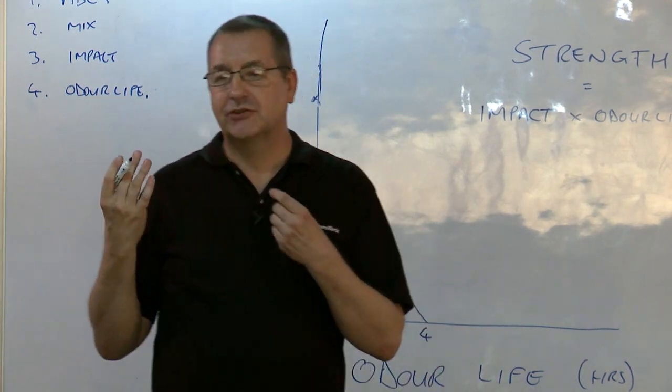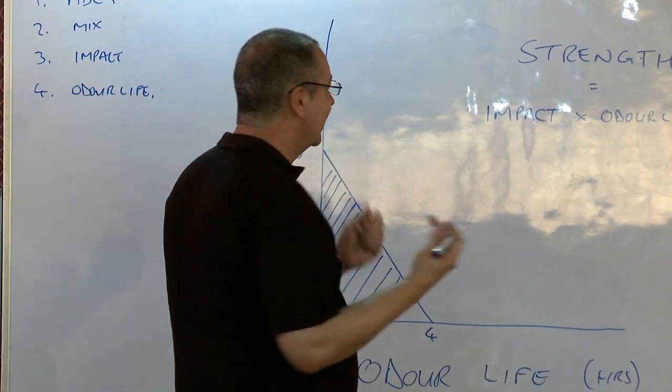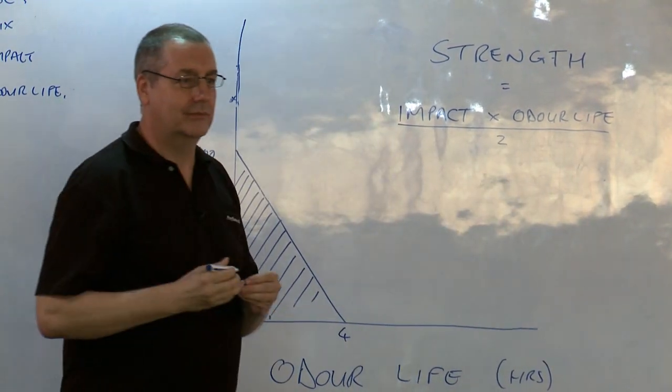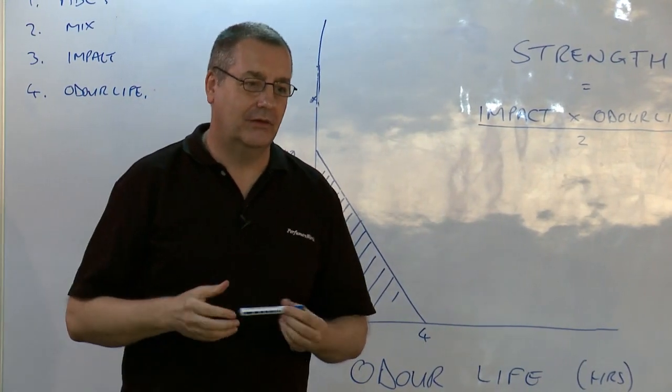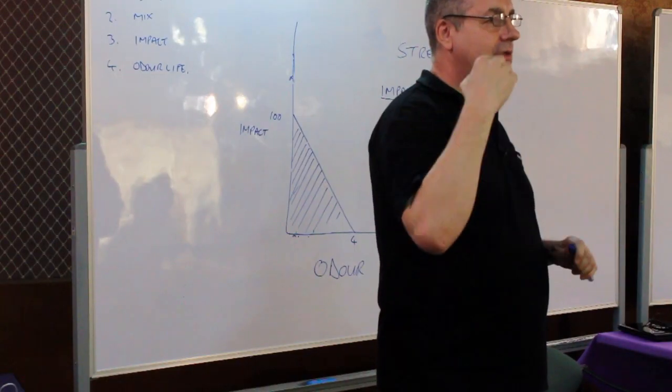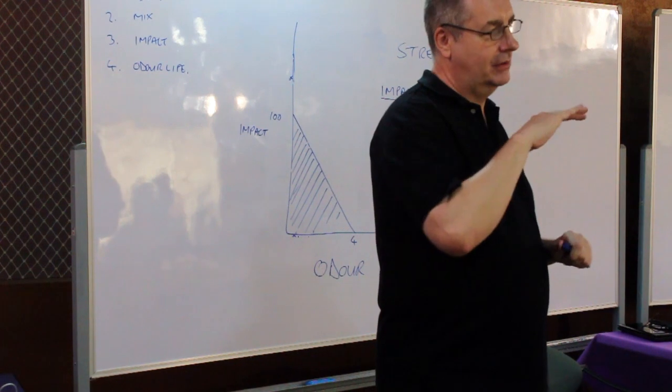But because it's a triangle for mathematics, it doesn't make a lot of difference to us, but we just divide it by 2. So the strength of a material is its impact times its odor life divided by 2.